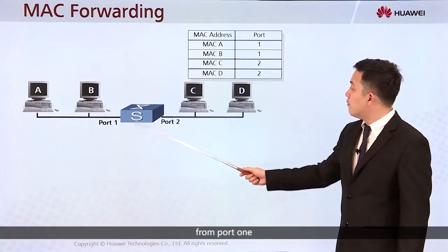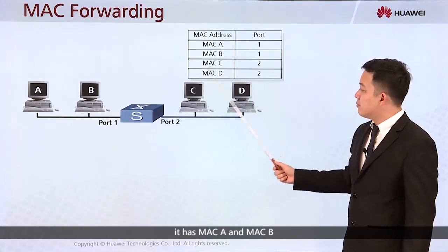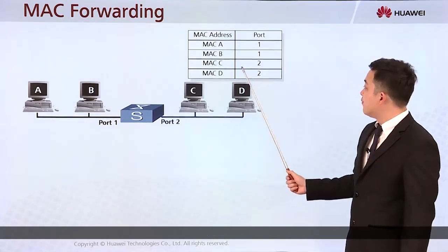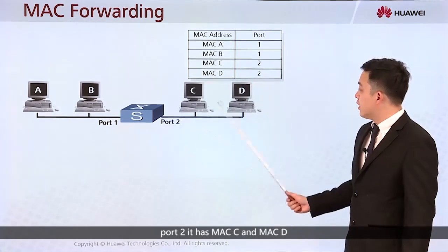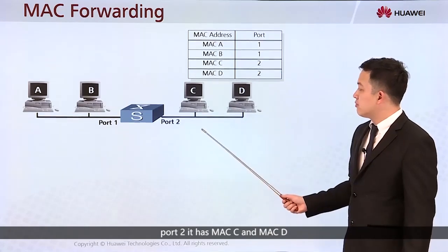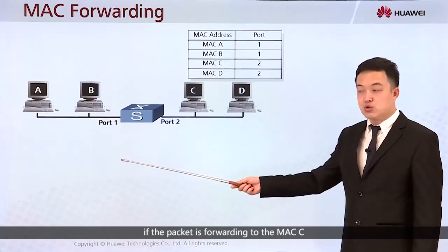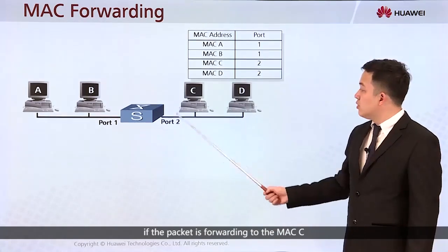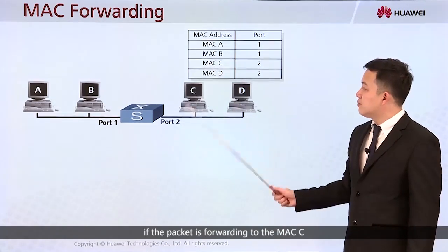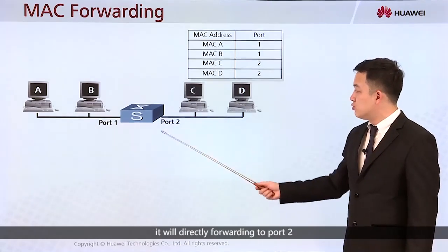For example, port 1 has MAC A and MAC B, and port 2 has MAC C and MAC D. Next time, if a packet is forwarded to MAC C, it will be directly forwarded to port 2.